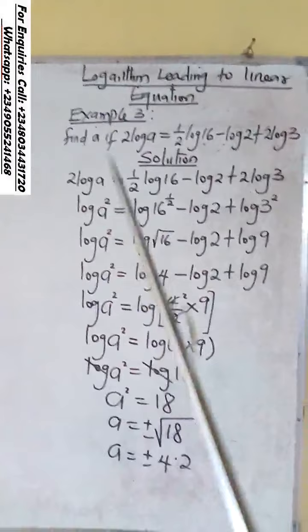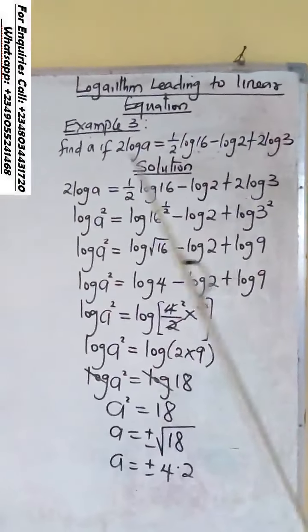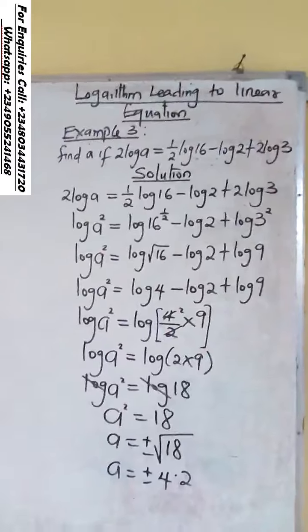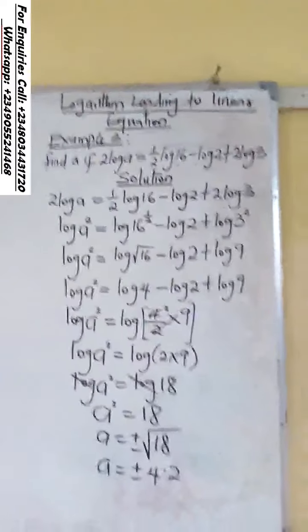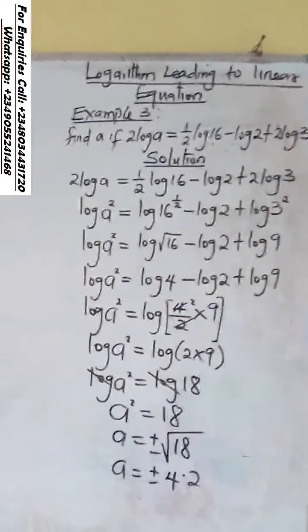If you look at the question, you find that there's nothing on the base. It means that the logs there are in the natural base, which is log 10. Now, you follow the laws of logarithm at each point.